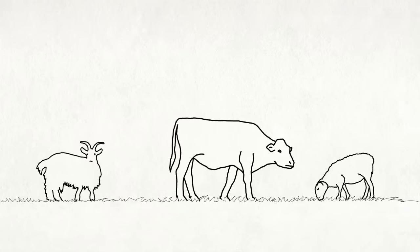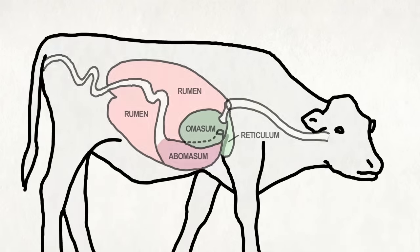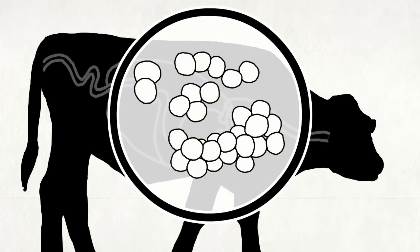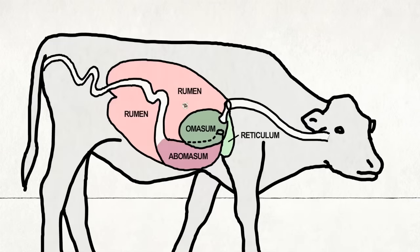These are ruminants. Ruminants have specialized stomachs containing microorganisms. This allows them to eat hard-to-digest plants like grass, unlike pigs and chickens.